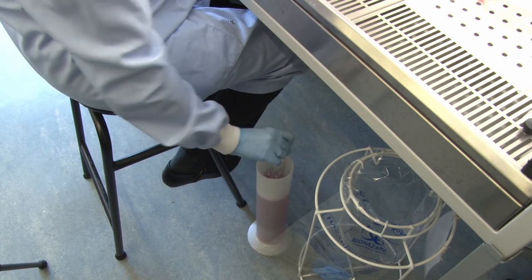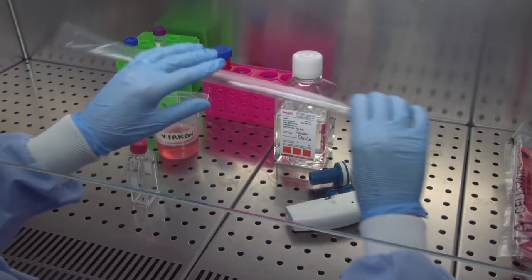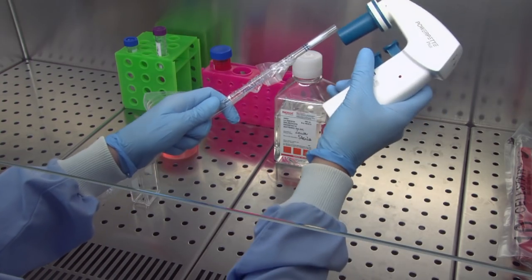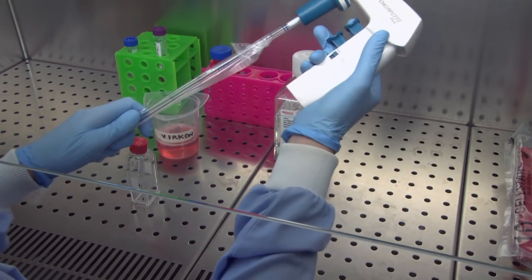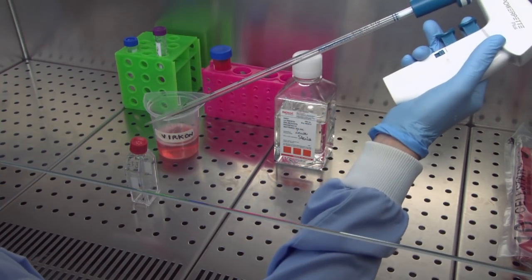The next step uses a molecule called trypsin, the digestive enzyme that's found in all mammals. It's used to disrupt the proteins which stick the cells to the plastic flask.